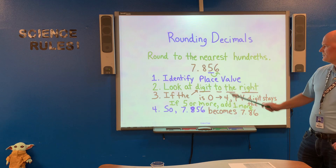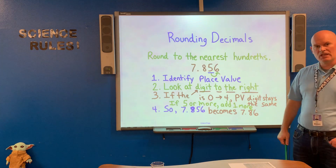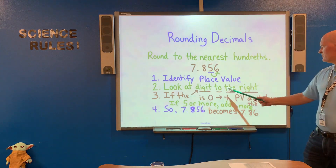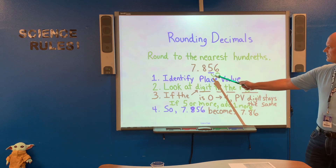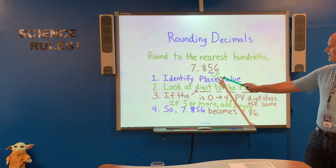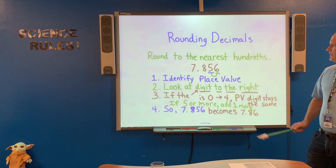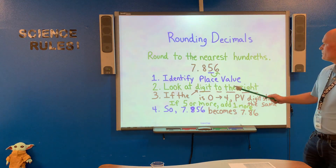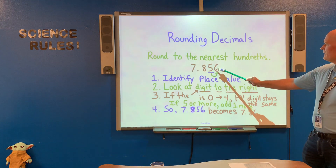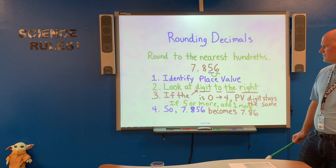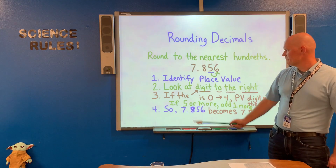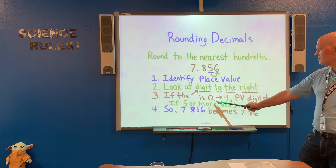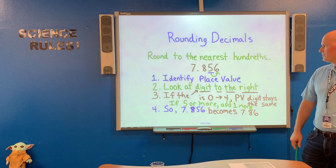Step one: identify the place value. Notice how I've underlined in blue the hundredths place value. Step two: look at the digit to the right. I drew a little line here in green to the digit to the right — we do that because that is a lesser place value.